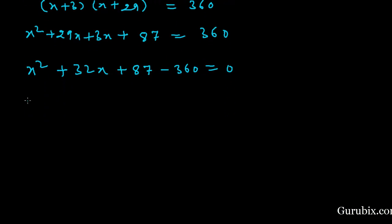This equals X square plus 32X minus 273 equals 0. Now we shall factorize this quadratic equation by using the method of splitting middle term.